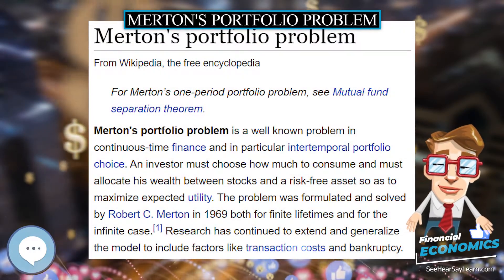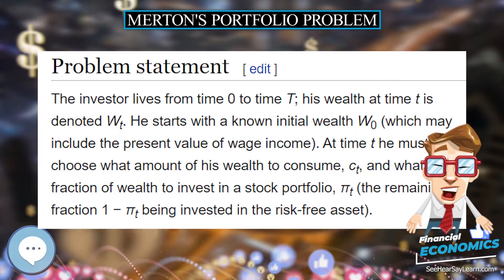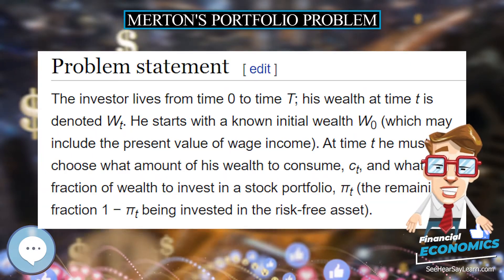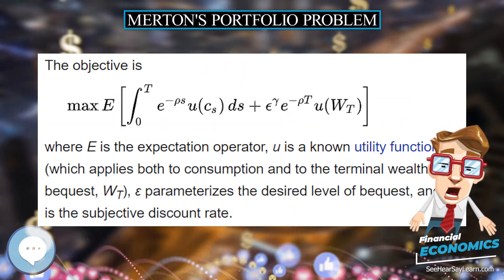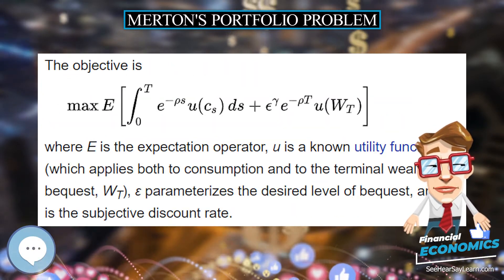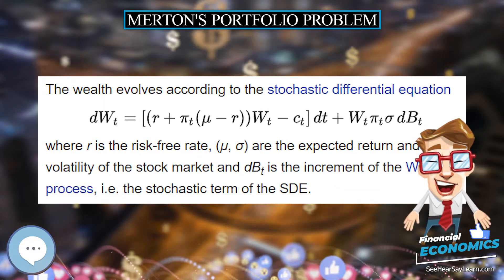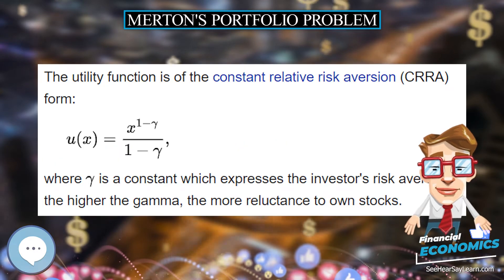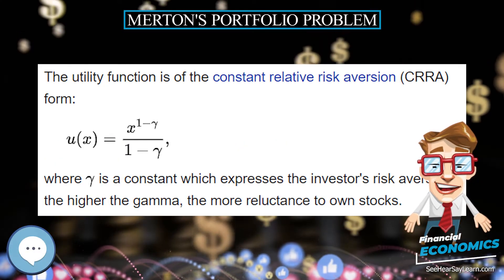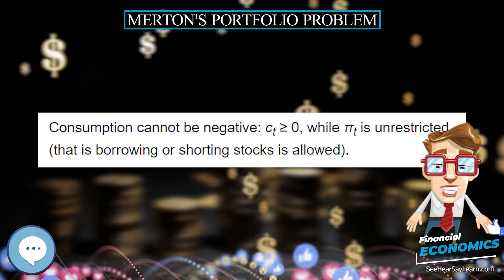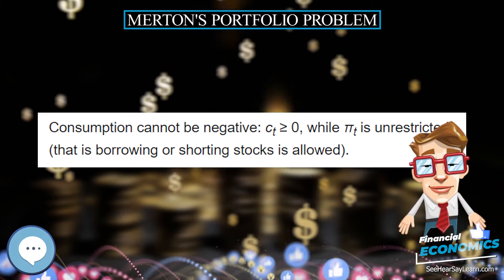Merton's Portfolio Problem is a well-known problem in continuous-time finance, and in particular intertemporal portfolio choice. An investor must choose how much to consume and must allocate his wealth between stocks and a risk-free asset so as to maximize expected utility. The problem was formulated and solved by Robert C. Merton in 1969, both for finite lifetimes and for the infinite case.